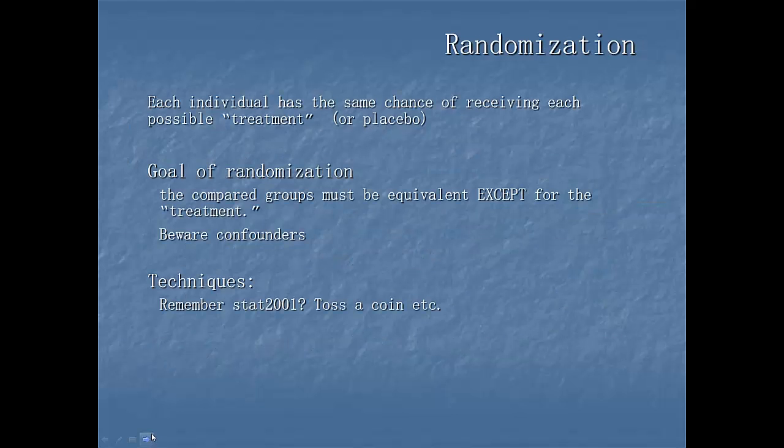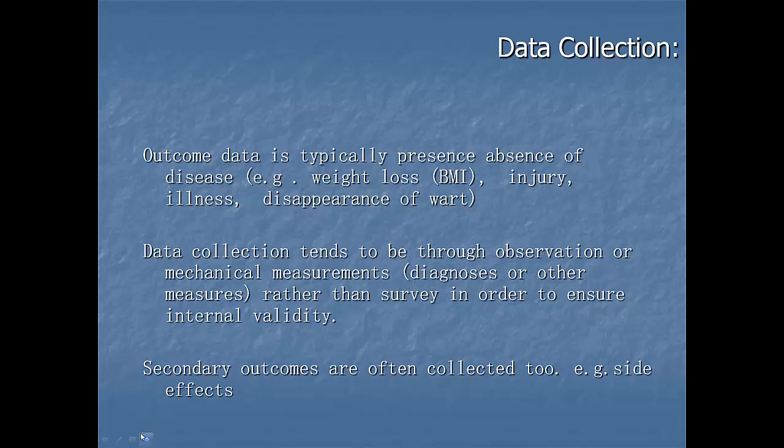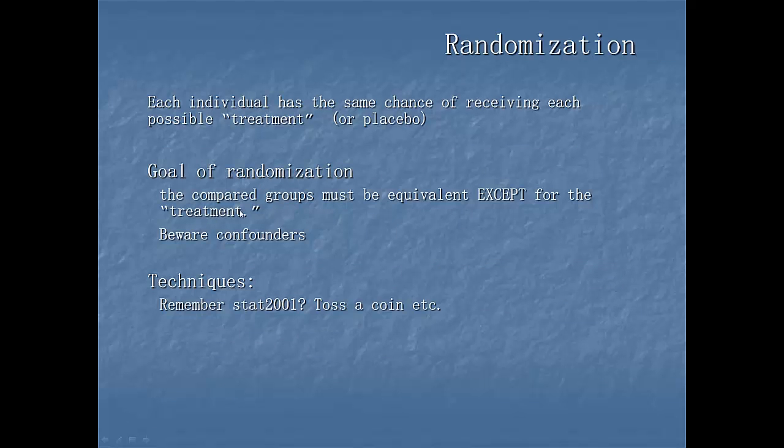Randomization, that's basically putting individuals from within the sample into the treatment or control slash placebo group. So we can do that through tossing a coin. We can do that in various different ways. Forgot to mention the fact that what we want is we want the treatment group to be similar to the control group, except for the treatment.